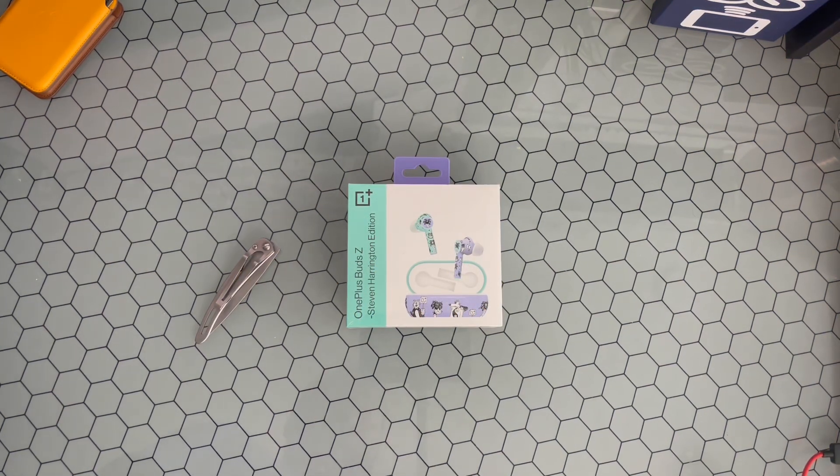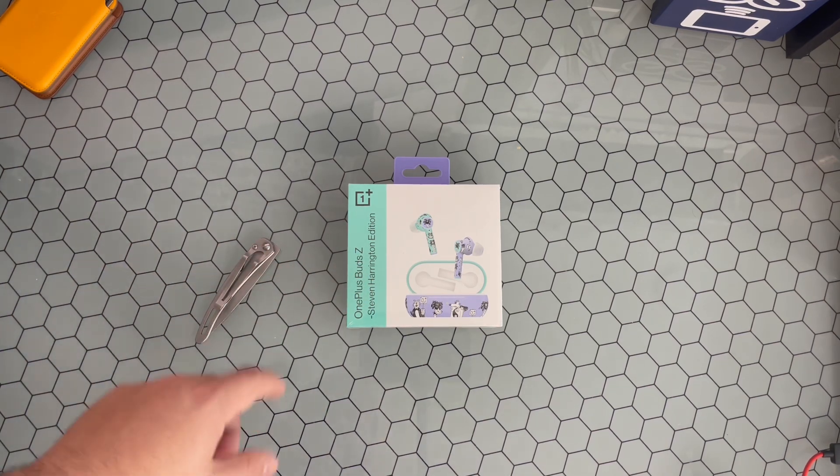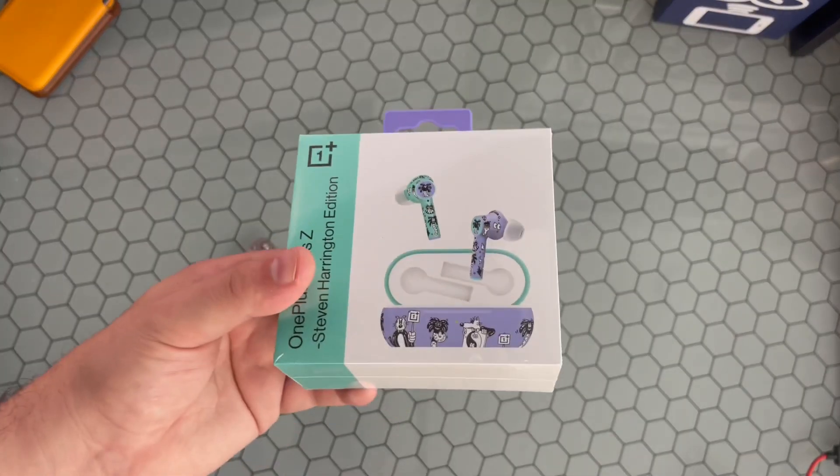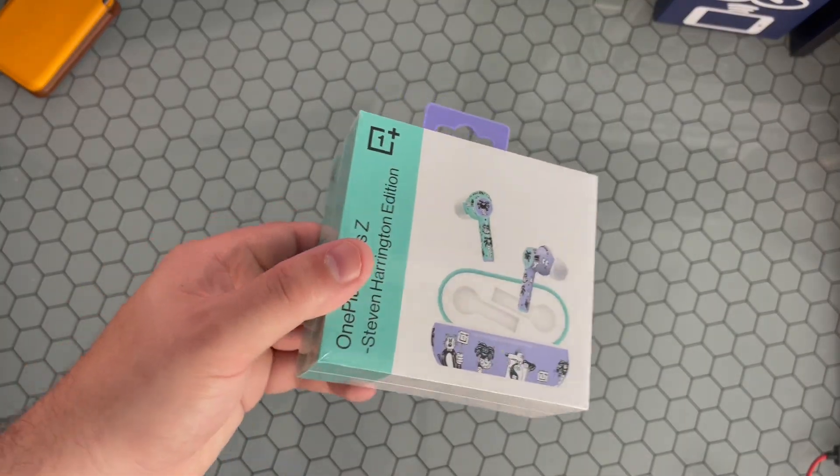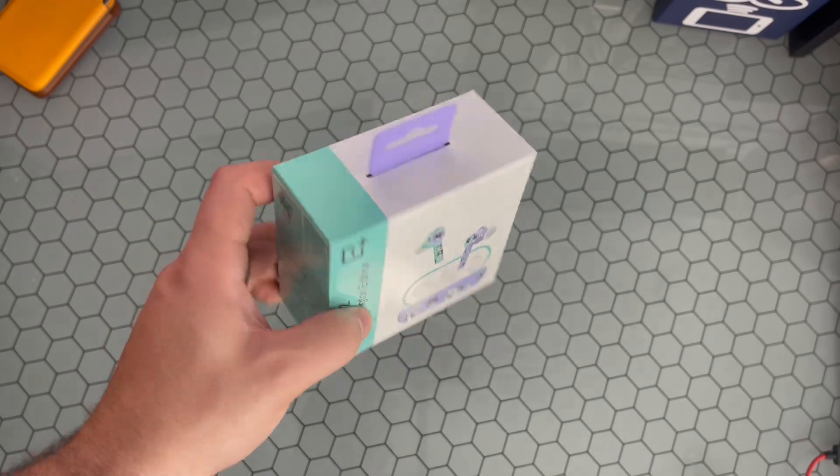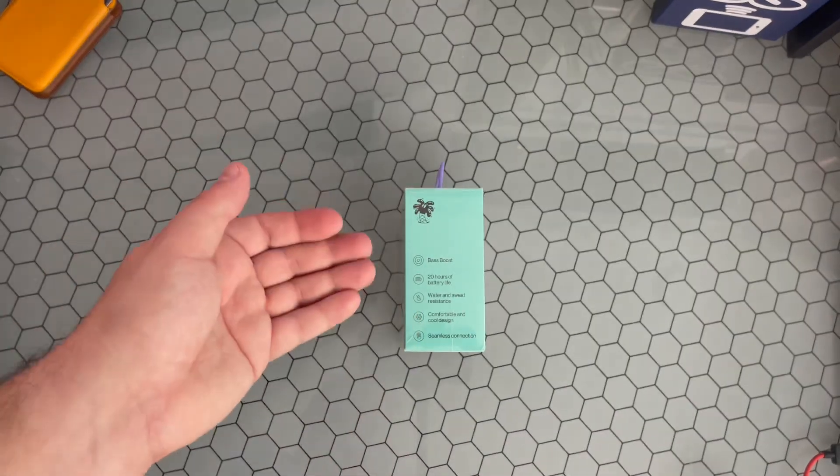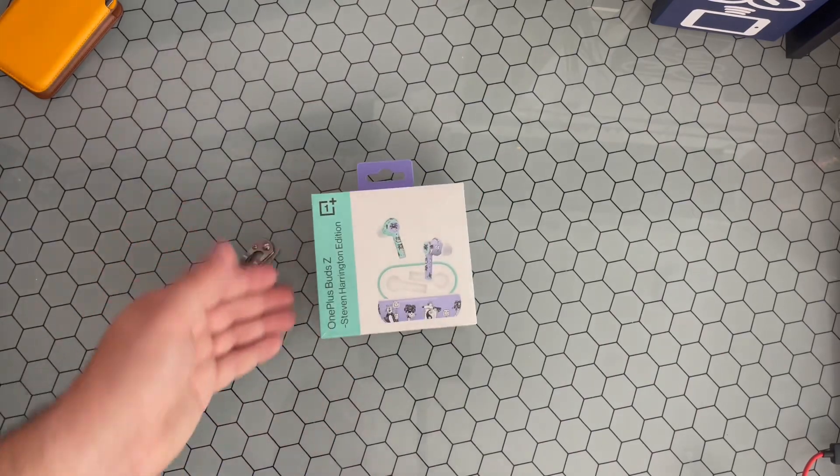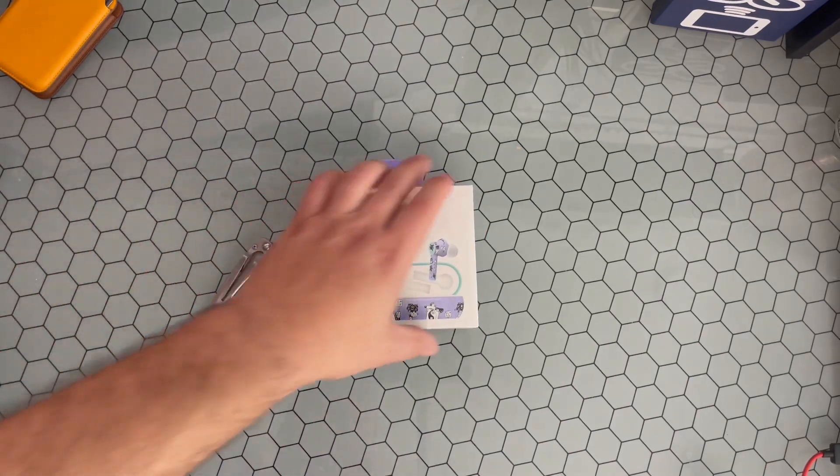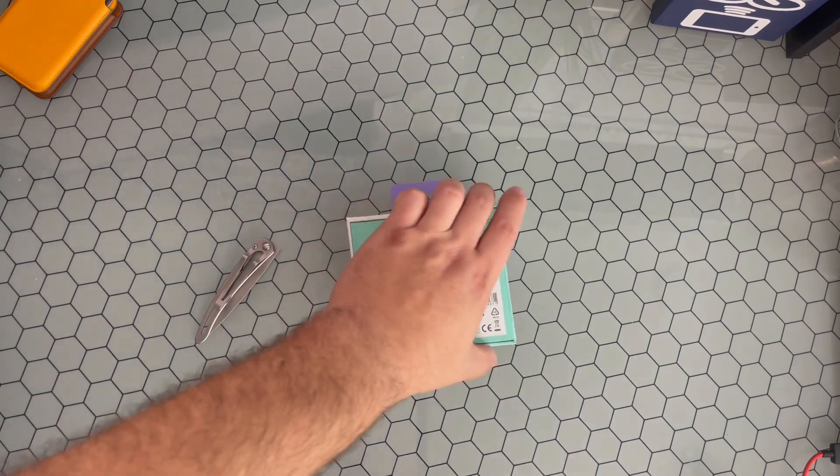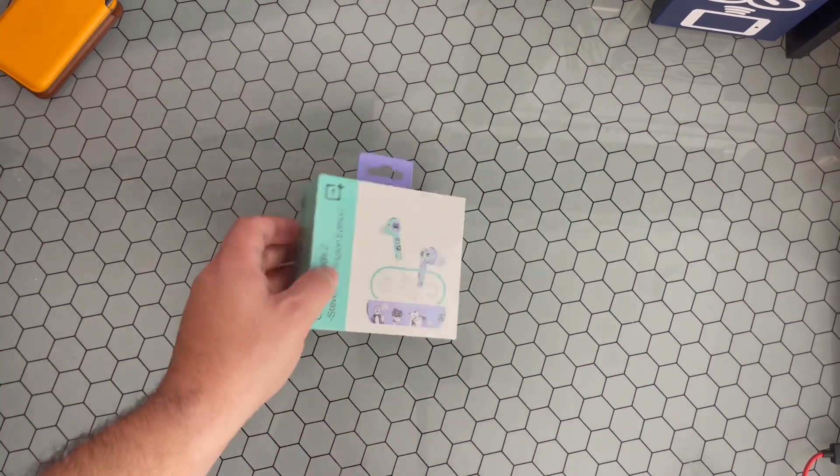What is going on everybody, welcome back to Phones and Drones. We have in-house the new OnePlus Buds Z Stephen Harrington Edition. These are some of the coolest looking print jobs on basically AirPod clones, if you want to call them that, that I have seen. There is no difference as far as specs go from the regular OnePlus Buds Z, but they do come in this limited edition packaging and with that unique print job on the actual earbuds themselves and the case.